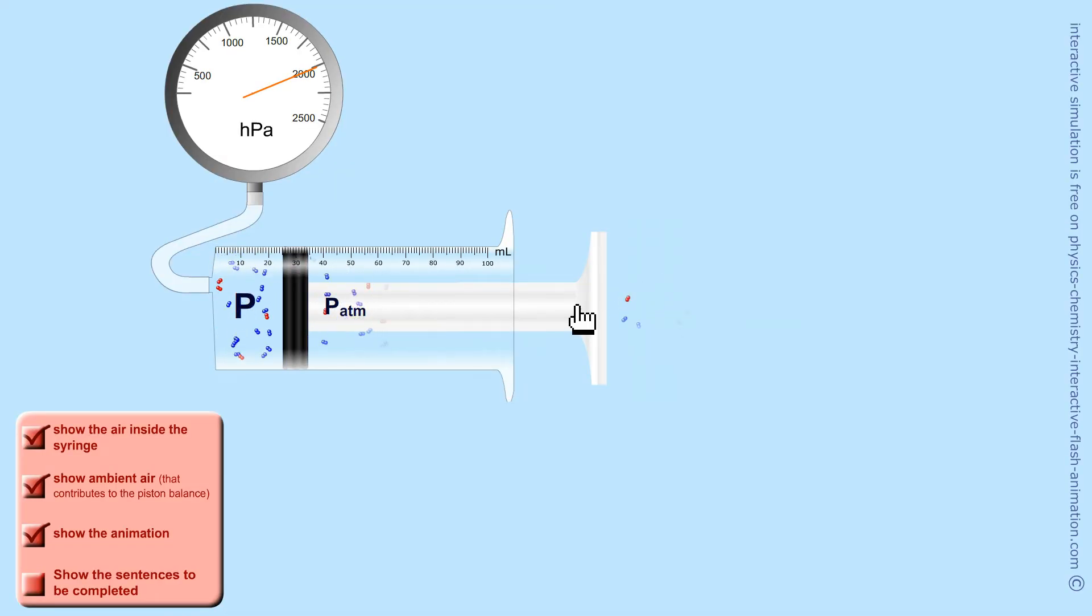So when the volume decreases by half, the pressure increases by double. When one is divided by 2, the other is multiplied by 2. They are said to be inversely proportional. It is their product that remains constant.